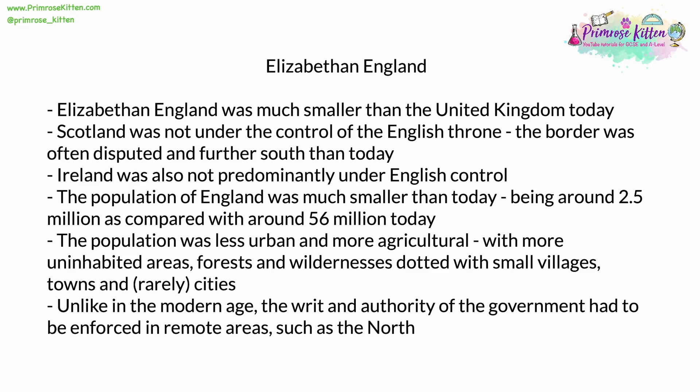England during the reign of Elizabeth was very different to the England of today. Most importantly, it was much smaller. Scotland was not under the control of the English throne — it was not yet the United Kingdom. The border with Scotland was usually disputed and often much further south than it is today. The island of Ireland was also not predominantly under English control, although sporadic and often failed attempts to control it would be made throughout Elizabeth's reign.